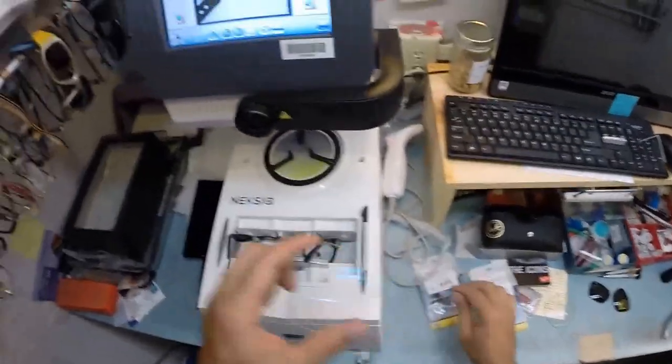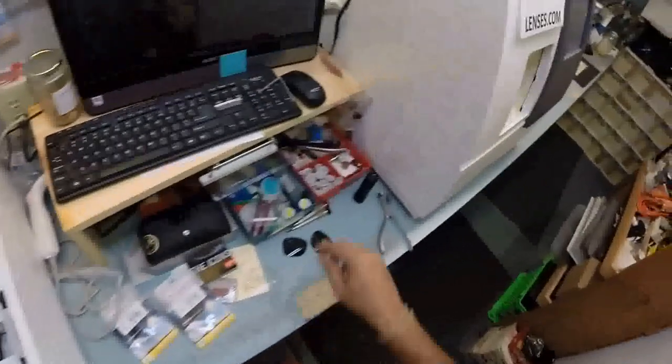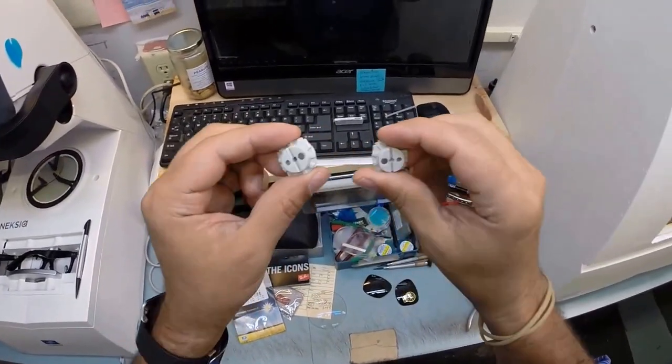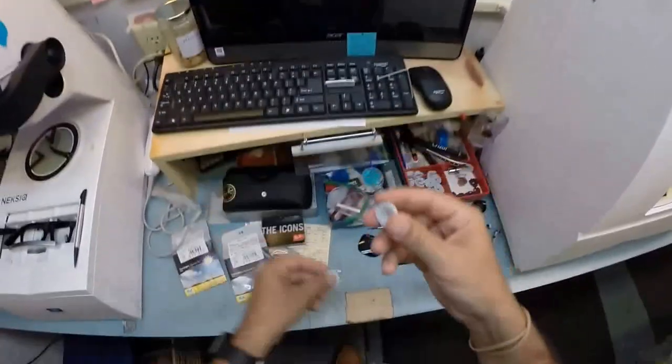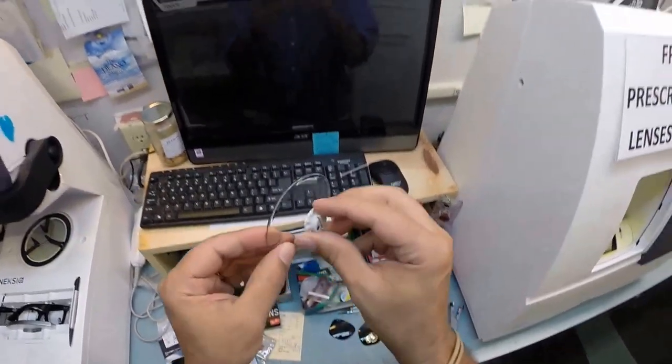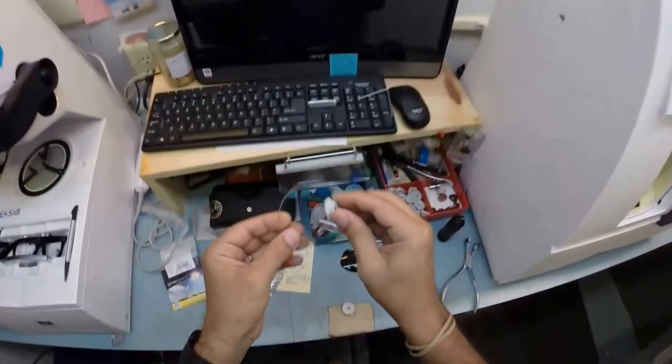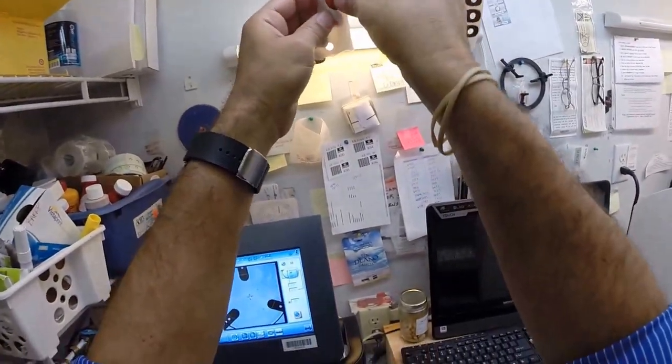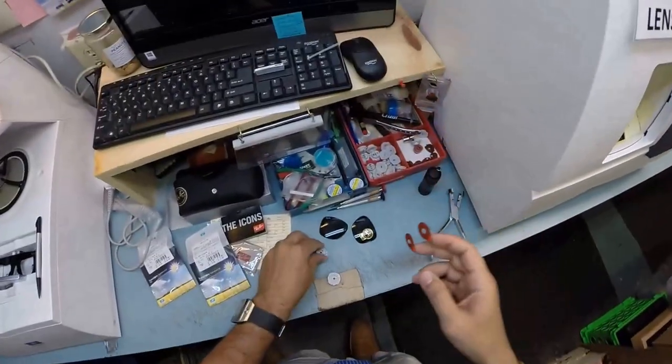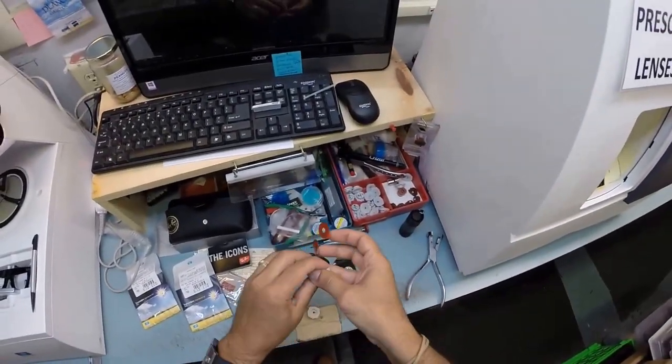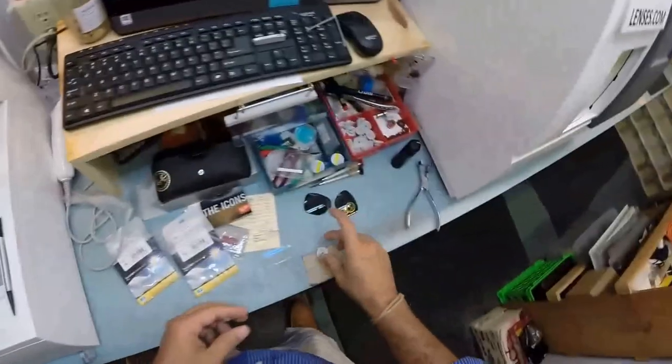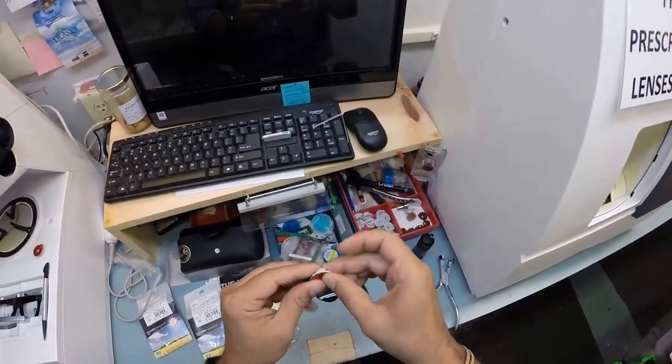I'm going to take the first lens and place it on the platform of the blocker. This is called a block, or as I like to call it, Jenny from the block. I need to attach this to your lens while it is cutting. I'm going to take two double-sided adhesive stickers and stick them onto the first block.